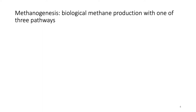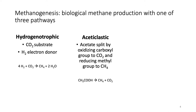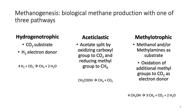But what exactly is methanogenesis? In simple terms, it is the biological production of methane through one of three major pathways. First, we have hydrogenotrophic methanogenesis, which uses carbon dioxide as substrate and hydrogen as electron donor resulting in methane and water formation. Second, acetoclastic methanogenesis, where acetate is split by oxidizing the carboxyl group to carbon dioxide and reducing the methyl group to methane. And third, methylotrophic methanogenesis, with methanol and methylamines as substrates, where electrons are gained through the oxidation of an additional methyl group to carbon dioxide. So with four methyl groups as input, you will end up with three molecules of methane.